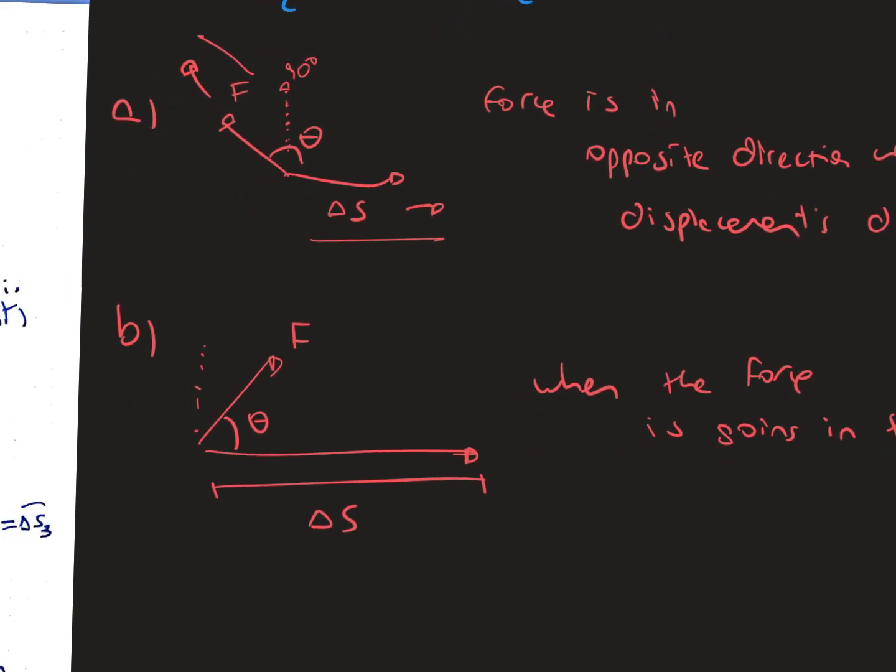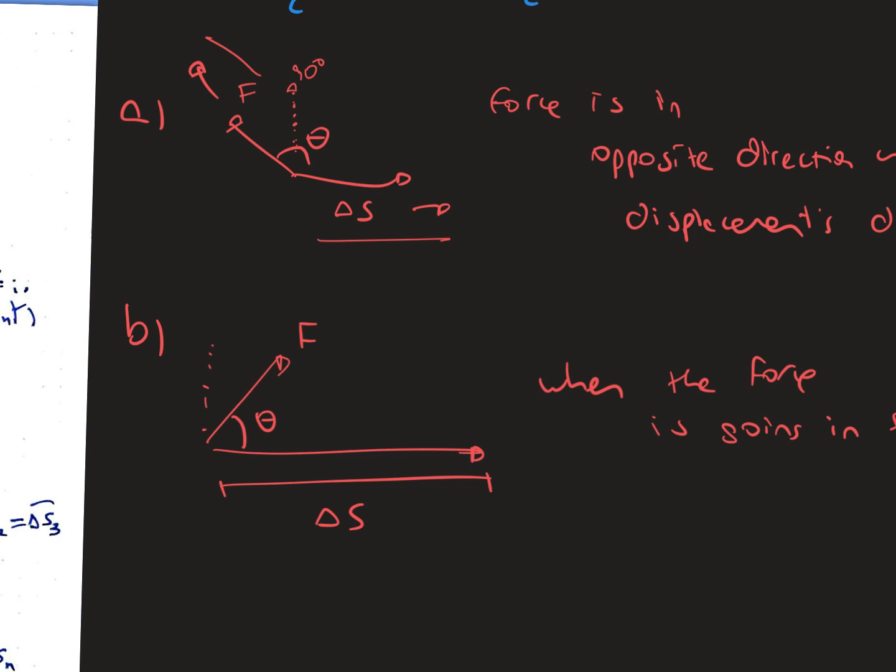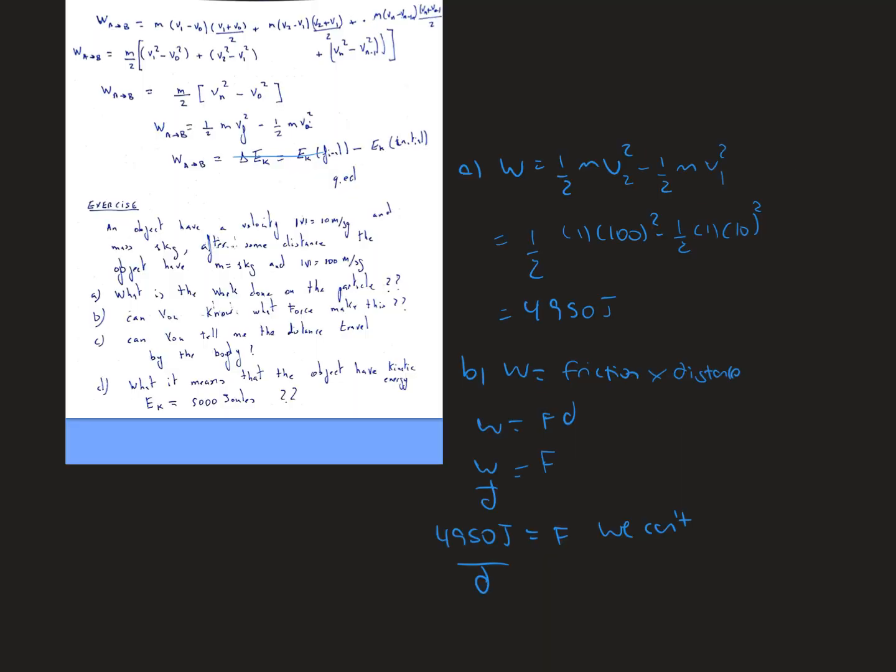When the work is positive, the force is going the same direction where the displacement is going. In this case, theta will be less than 90 degrees. For the first part, what is the work done on the particle?